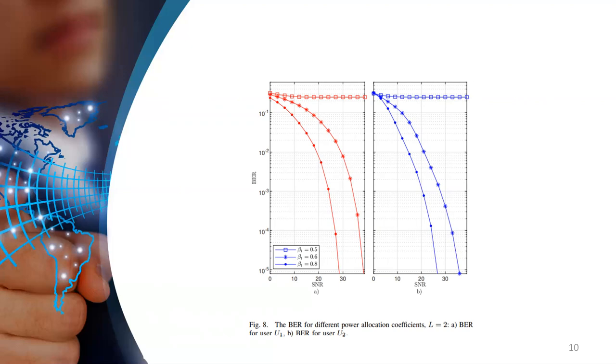or if we use β1 equals β2 and equals one half, the performance of the system will be so bad.